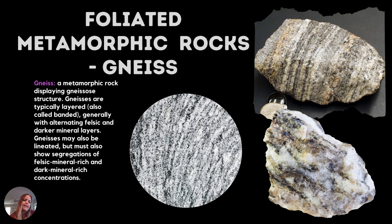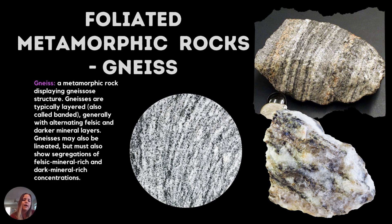Then we get into gneiss. Gneiss looks like an organized granite for the most part, because it kind of is — its protolith is granite. As the minerals go through directed pressure, they start to align in a black-and-white banding. So if you see a rock with black-and-white banding, it's usually a good indicator that you're looking at gneiss. Those bands are just the felsic and mafic minerals basically organizing themselves.